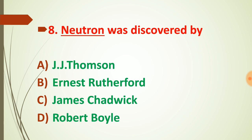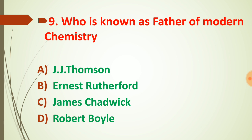Question number nine: who is known as the father of modern chemistry? Robert Boyle is known as the father of modern chemistry. To revise: J.J. Thomson discovered the electron, Rutherford discovered the proton, James Chadwick discovered the neutron, and Robert Boyle is known as the father of modern chemistry.